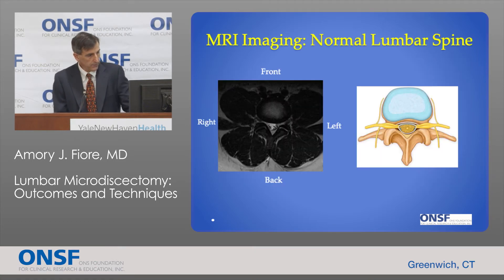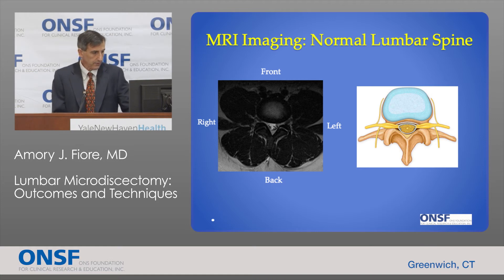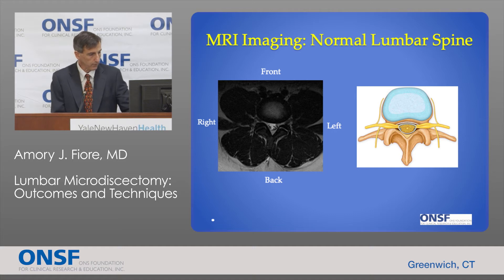This is the other view that we use, which is an axial image. In this view, this is the front, back, right, and left — it's as if you were standing at someone's feet when they were lying on their back and looking up through them. So it's a cross-sectional view. Here we have the disc in front, and then the sac of nerves, and the little dots are the individual nerves.